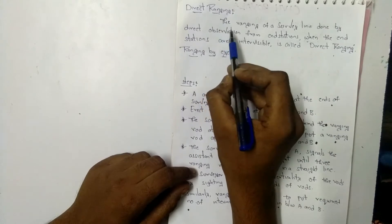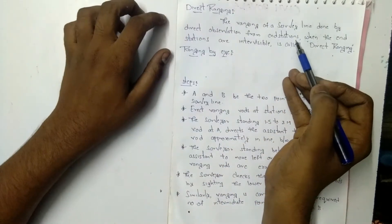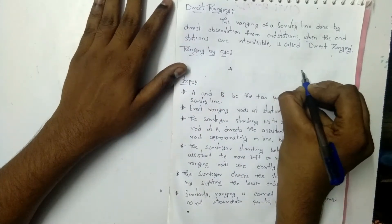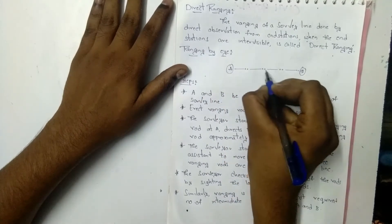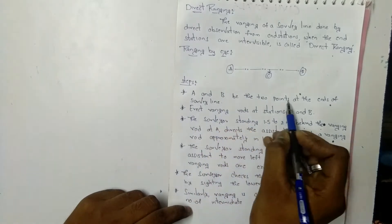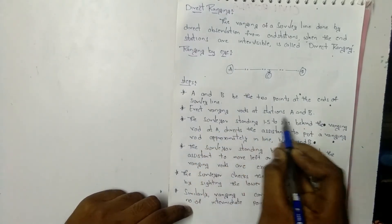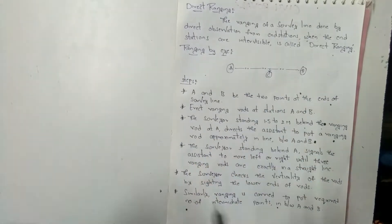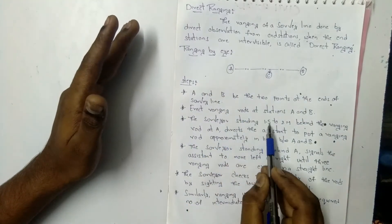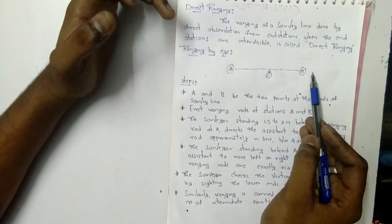The ranging of a survey line is done by direct observation from end stations. We can do direct intervisibility for end stations. When the end stations are intervisible, this is called Direct Ranging. A and B are the two end stations of a survey line, with C as an intermediate point. We use Direct Ranging by the Eye method. Ranging rods are placed at stations A and B, erected and plumb, at a height of 1.5 to 2 metres.